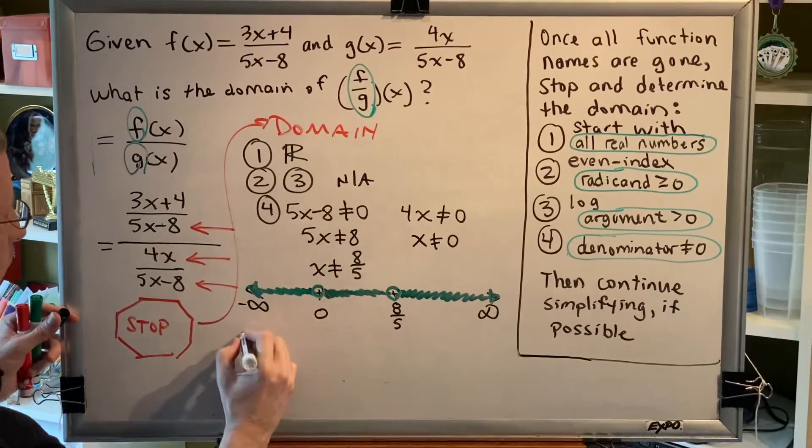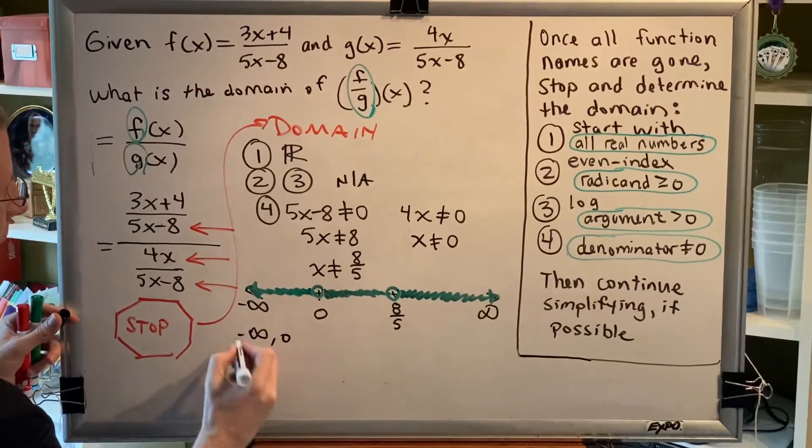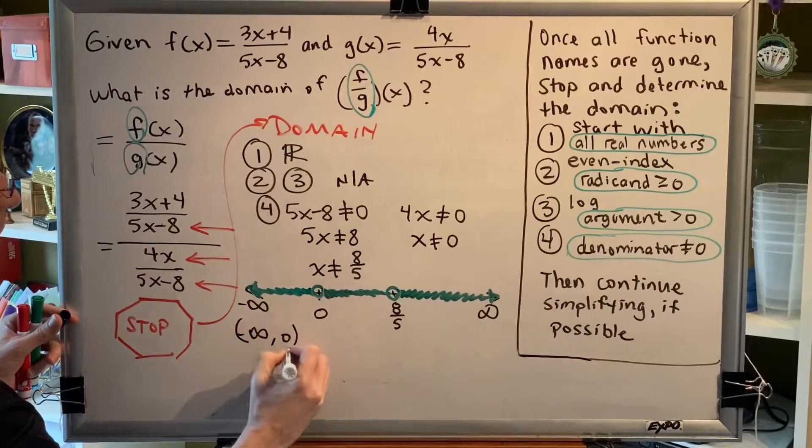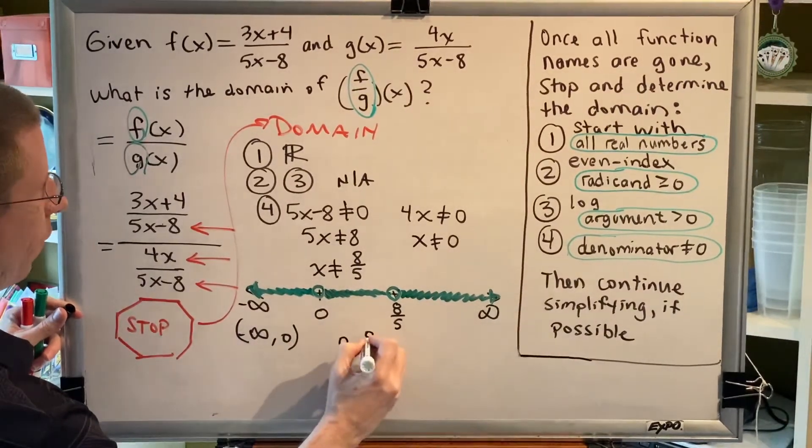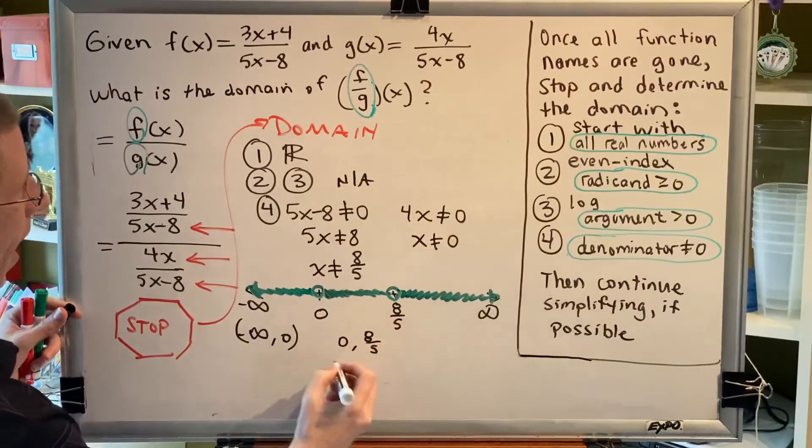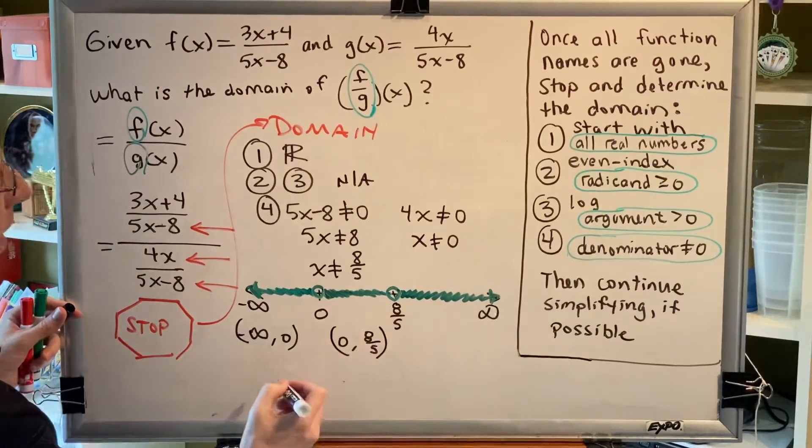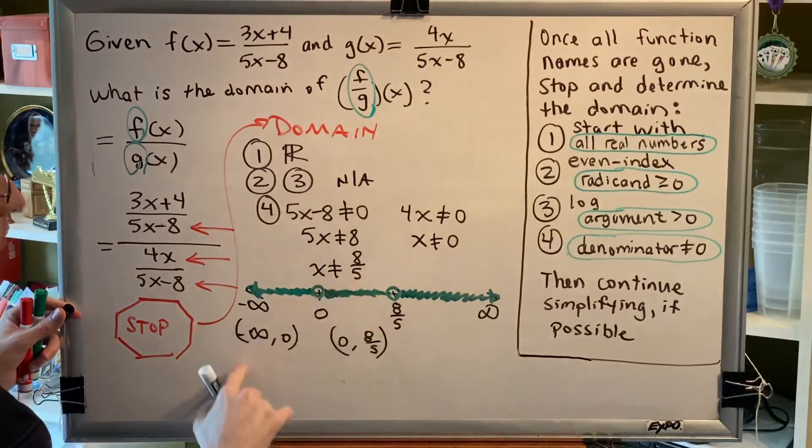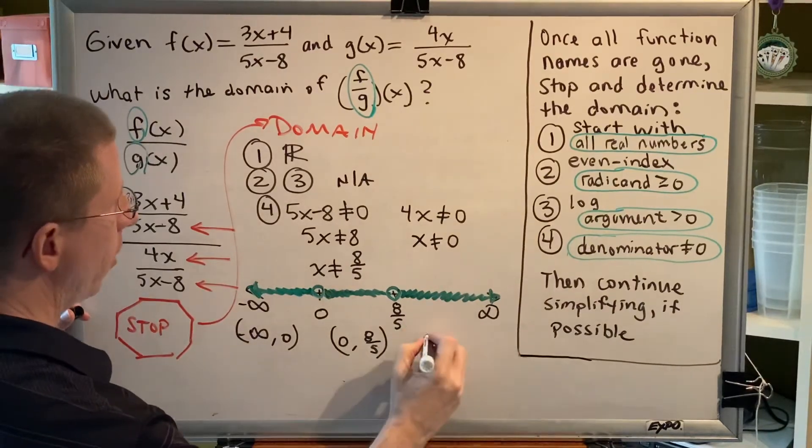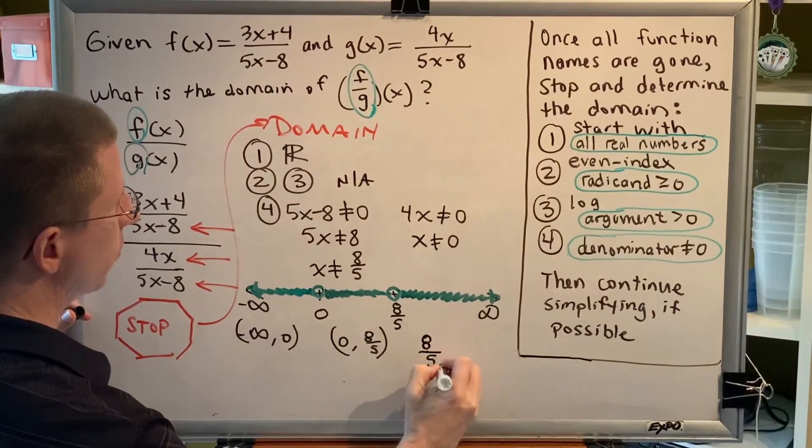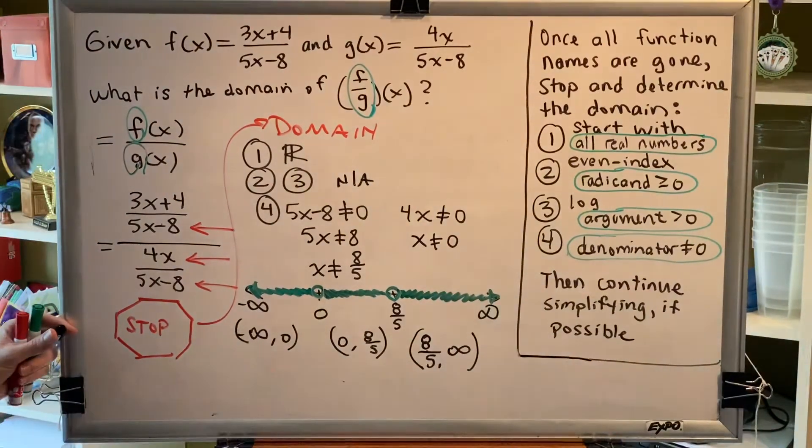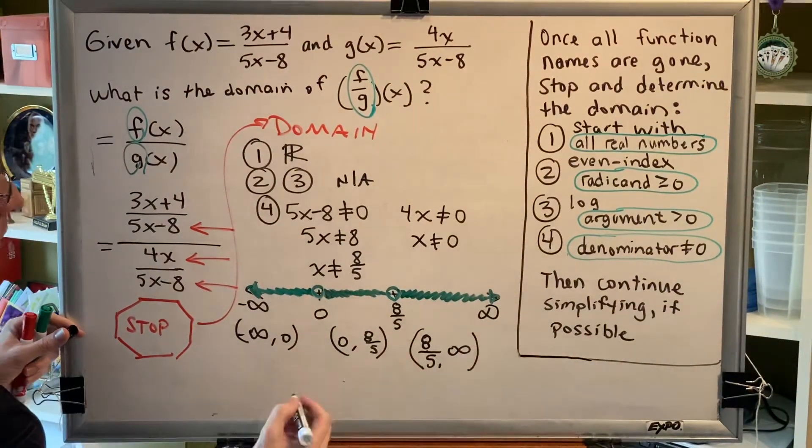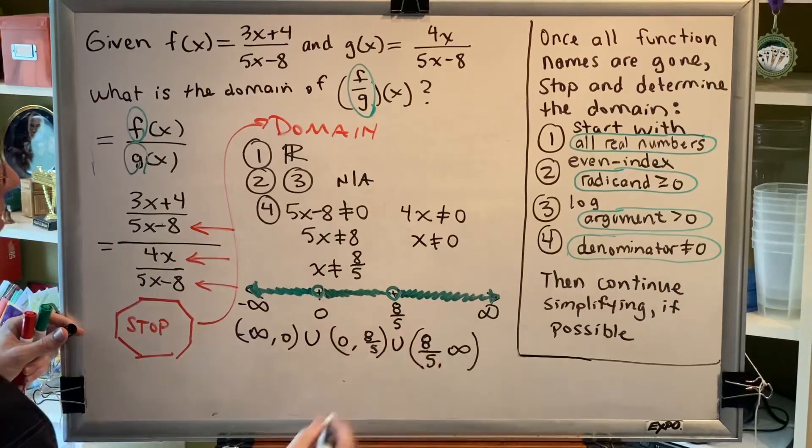The first one goes from negative infinity to zero, and we have a parenthesis on both ends. The next interval goes from zero to eight fifths, and we have a parenthesis on both ends because we're excluding those values. And our third interval goes from eight fifths to infinity, and again we have parentheses at both ends. In order to unite all of these intervals together, we use the union symbol.